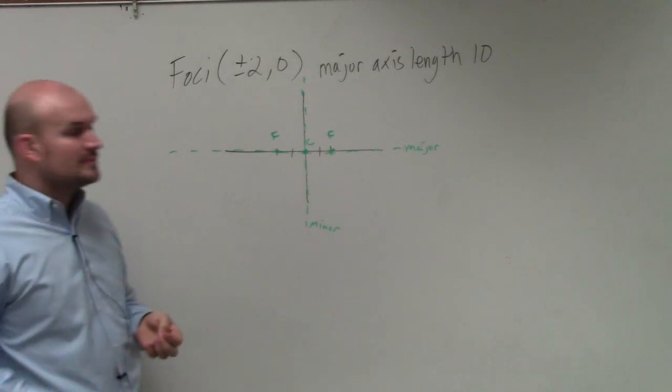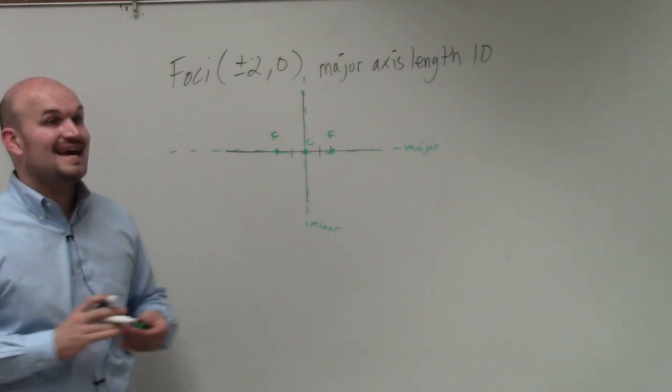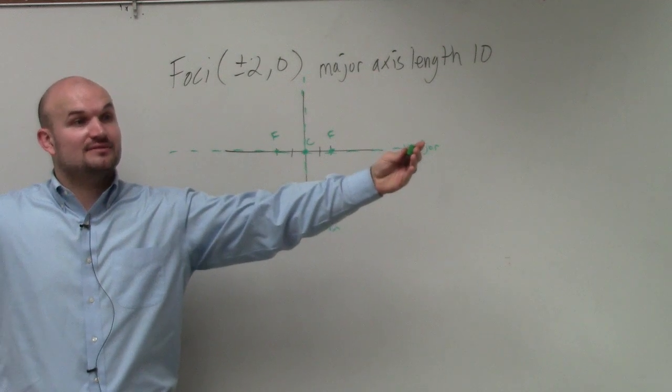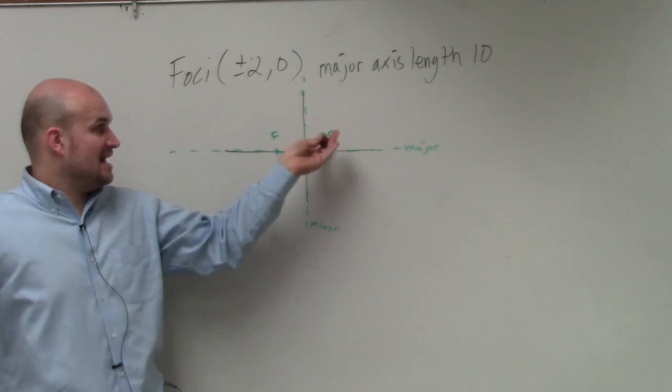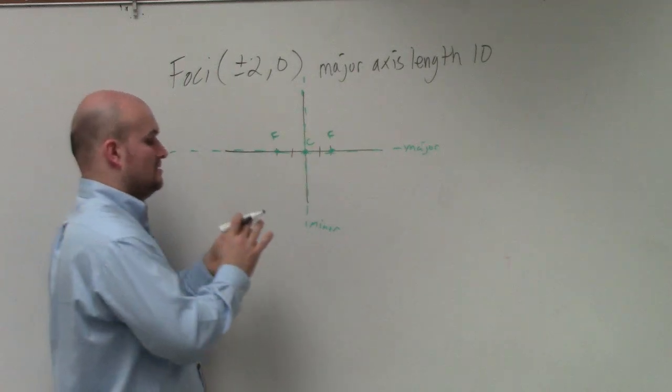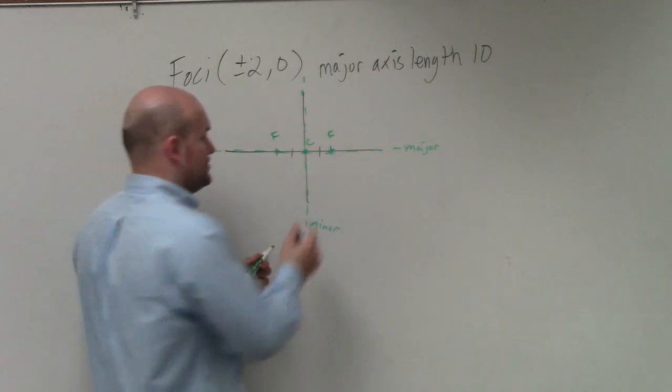The center is in between the two foci. Here's your two foci, center is right in between. So 10 is from one vertices to the other vertices. So from vertices to vertices, not to f. That distance is c. The distance is 5 on each side, 5 on each side. So let's go and do that.